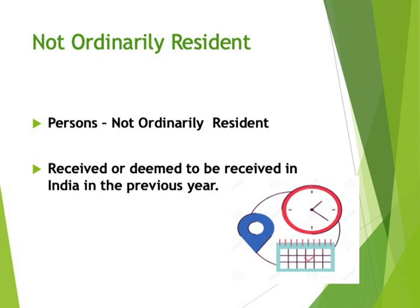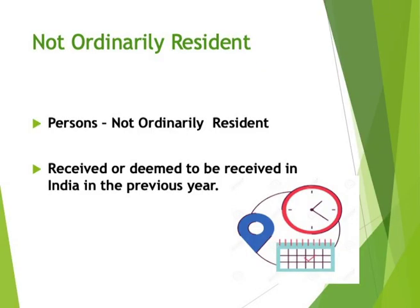Next, for a not ordinarily resident person - how do we determine whether tax is payable or not? As discussed in our earlier session, a person is called not ordinarily resident when they satisfy one or two basic conditions and only one additional condition. When does incidence of tax arise for this person? It arises when income is received or deemed to be received in India in the previous year - whether already received or deemed to be received in a later period.